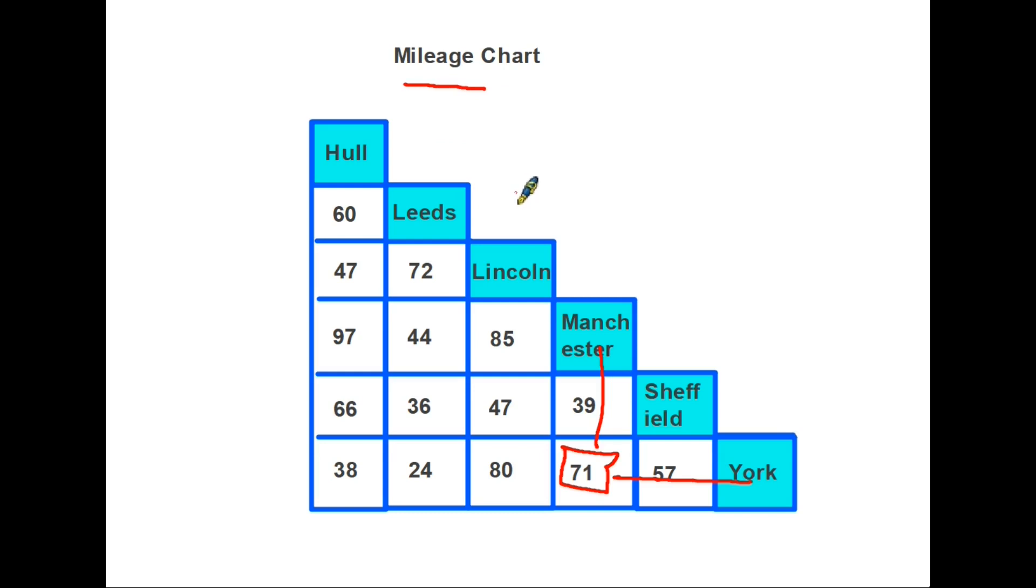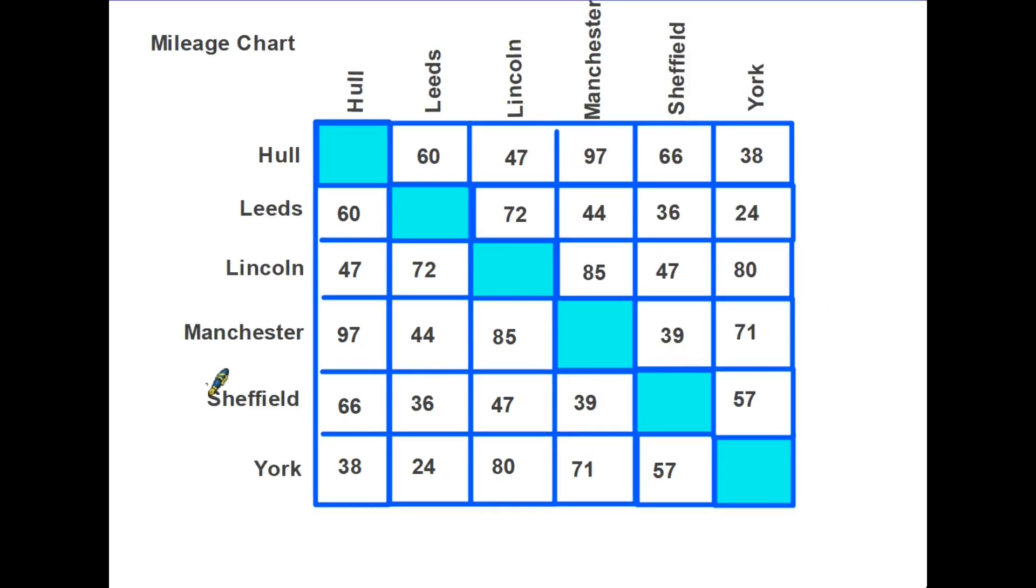Sometimes it looks a little bit different to this layout and in fact can look like this. The information is exactly the same. In fact the numbers in the bottom left hand corner here are exactly the same, but they've been repeated at the top here and the names are duplicated. The principle is exactly the same. If you want to know the distance from Hull to Sheffield, you go from Hull, take it across to the Sheffield box, and it's 66. So Manchester to Lincoln, Manchester across to Lincoln is there, but you can also go Lincoln to Manchester, Lincoln to Manchester, and of course it's exactly the same distance. So everything is duplicated.